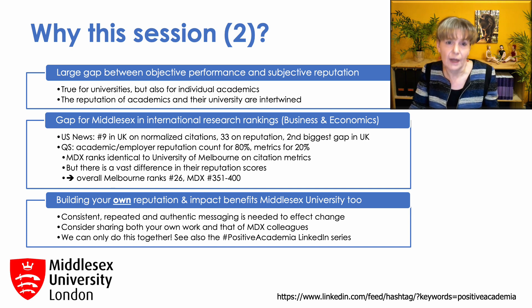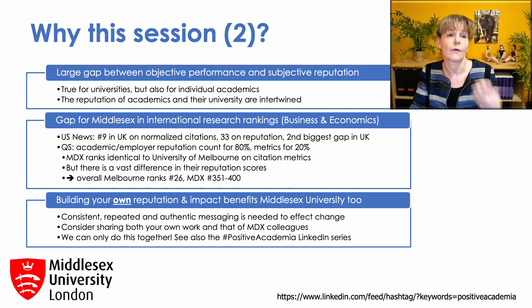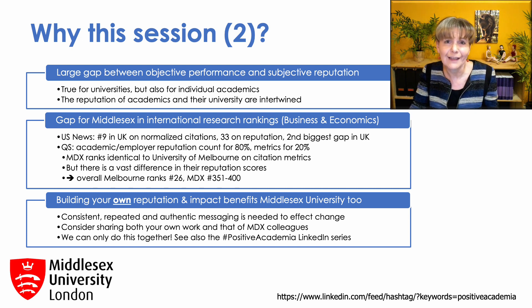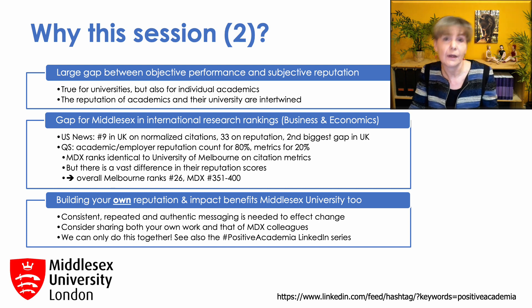In the QS ranking, Middlesex ranks identically to the University of Melbourne — my former employer — on citation metrics, but there is a vast difference in their reputation scores. As these reputation scores count for 80% and the metrics for only 20%, Melbourne ranks no less than 26th overall, whereas Middlesex ranks between 351 and 400. So improving our reputation is crucial, as reputation has a big impact not just in the international research rankings, but also in attracting staff and students, research funding, and maintaining influential positions in the higher education sector.